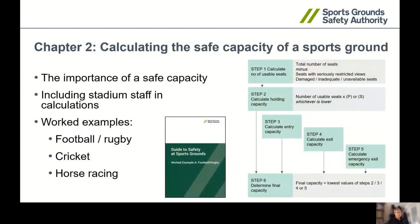Chapter two particularly of the Green Guide looks at the importance of setting the safe capacity, and within that chapter there are some process maps that indicate the methodology and go step by step at calculating each individual process so that you can end up at a final occupancy figure. We've also included on our website some worked examples. These are free to download, so I would advise anybody interested to go on the website, type in SGSA, look at the Green Guide, and then you can download these for free.